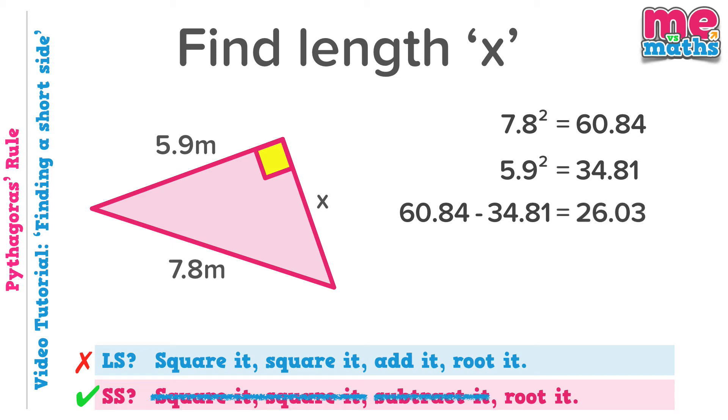And our final step, as always, don't forget this, is to square root this value to get our actual length. In this case, X is 5.1 metres. Remember, we said X was one of the shorter sides, so it should definitely be shorter than 7.8 metres. So do just check that at the end to make sure, as always, that your answer makes sense.